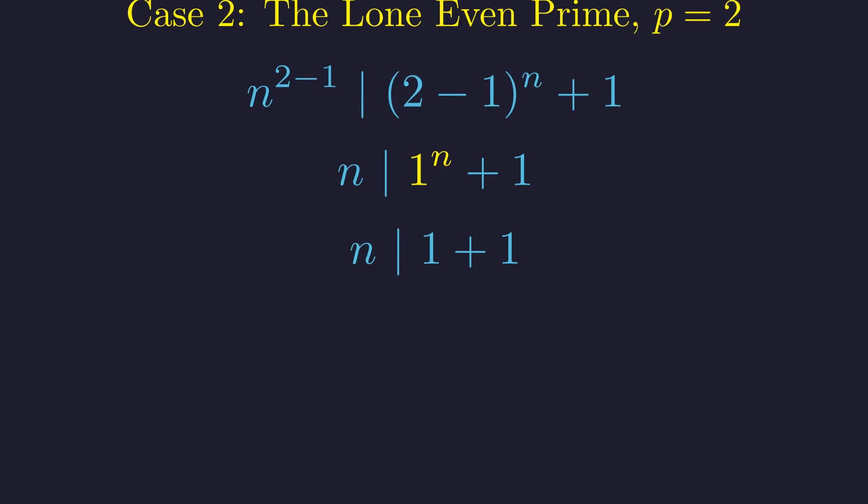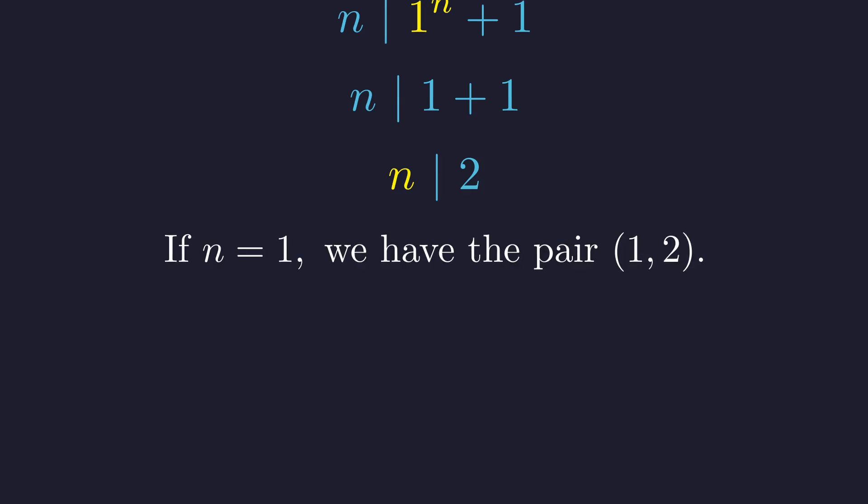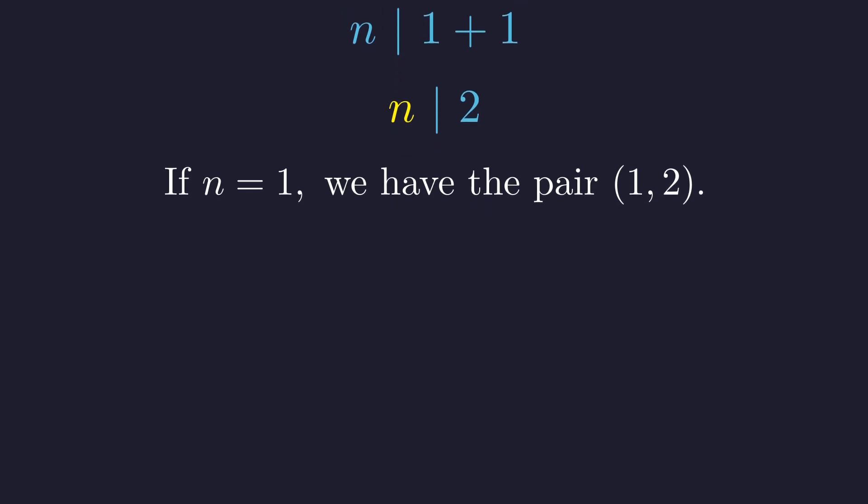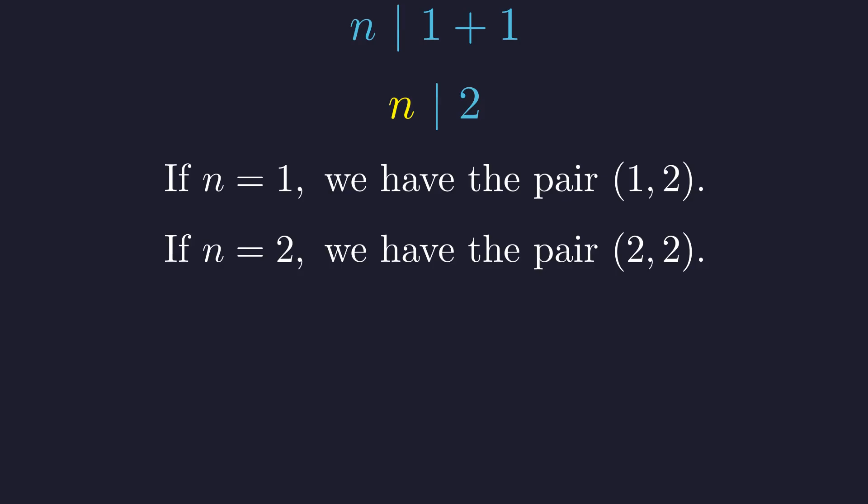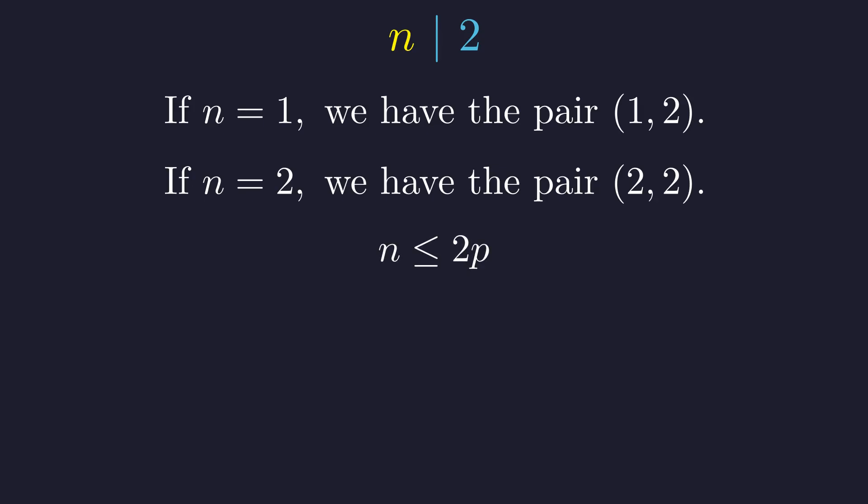The condition reduces to n must divide 2. Since n is a positive integer, the only possibilities are n equals 1 or n equals 2. The case n equals 1 yields the pair (1, 2), which belongs to the family of solutions we already found. The case n equals 2 gives a new potential solution, the pair (2, 2).